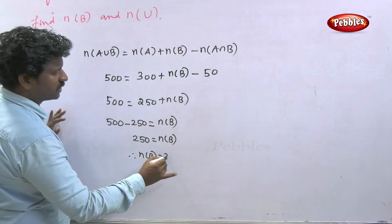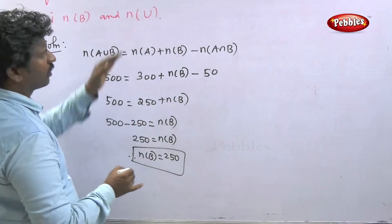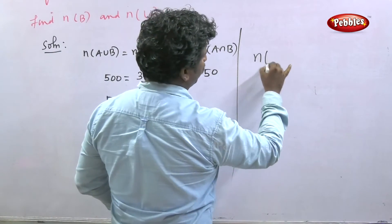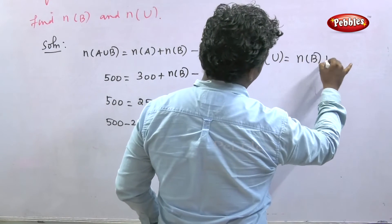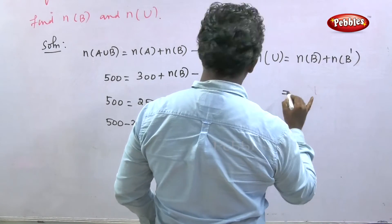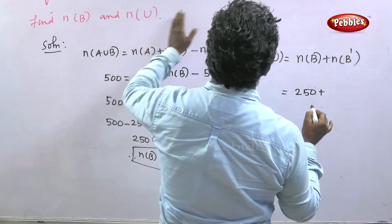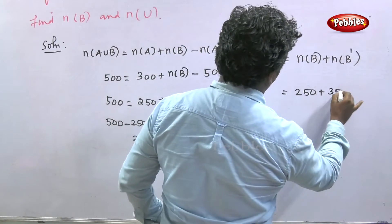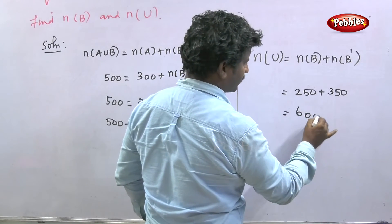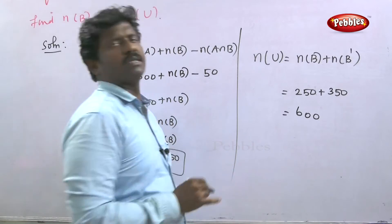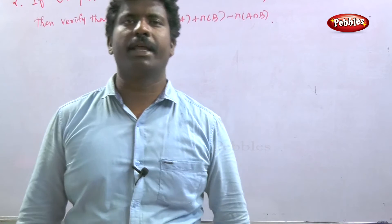For n of U: n of U equals n of B plus n of B dash. n of B is 250 and n of B dash is 350. So 250 plus 350 equals 600. Therefore n of U is 600.